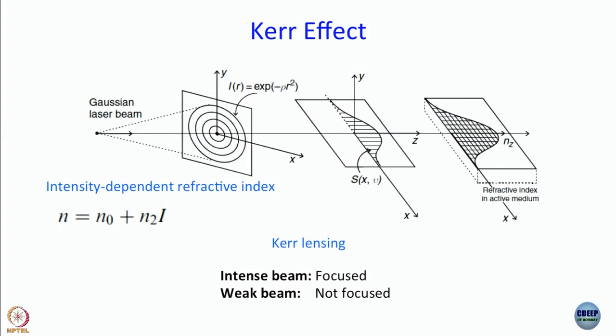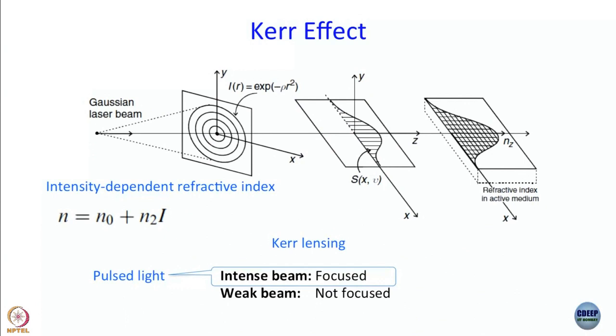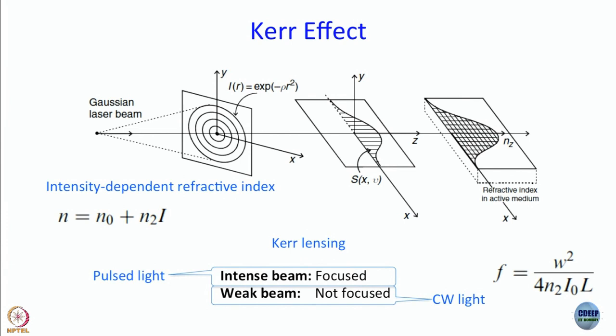So an intense beam will get focused and a weak beam will not get focused. Because do not forget, the beam itself is bringing in Kerr lensing. This is the part we really need to understand. It may not be so easy to follow when we hear it for the first time, and it is going to get more interesting as we go further. So what we have said is pulse light gives you an intense beam. So in a mixture of pulse light and continuous wave light, what will happen? You have a medium through which your mixture of pulse light and continuous wave light of the same wavelength range is going through. The pulse light will get focused and the CW part will not get focused.